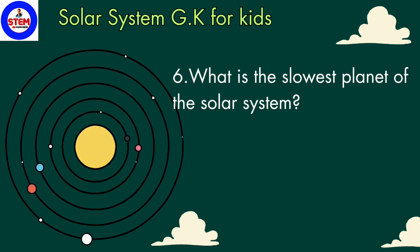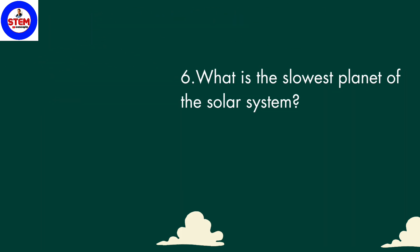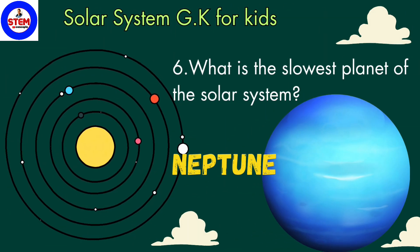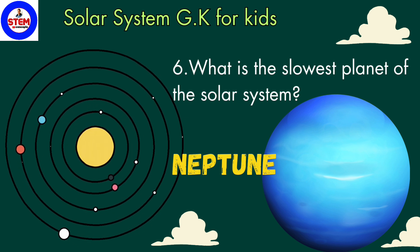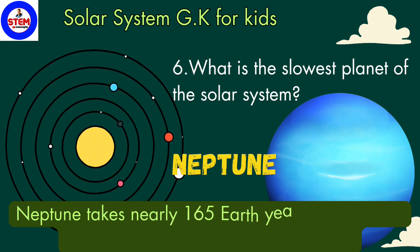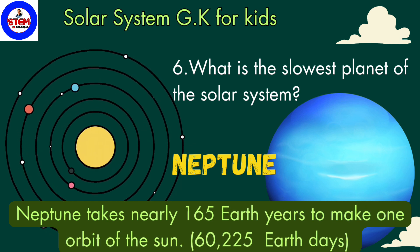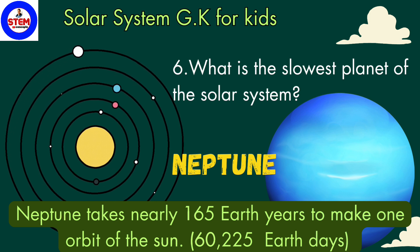Sixth question: what is the slowest planet of the solar system? The answer is Neptune. Neptune is the slowest planet and in order is the eighth planet from the sun. Do you know, children, Neptune takes nearly 165 Earth years — or 60,225 Earth days — to complete one full orbit of the sun.